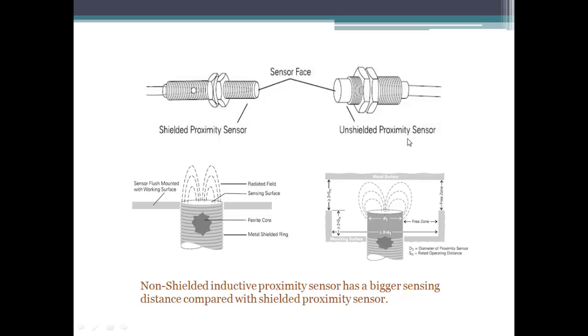There are two kinds of inductive proximity sensors: the shielded and unshielded model. The shielded sensor has a housing or metal band wrapping around the sensor's coil and it restricts the lateral radiation of the field.